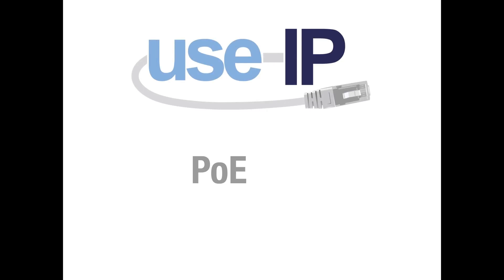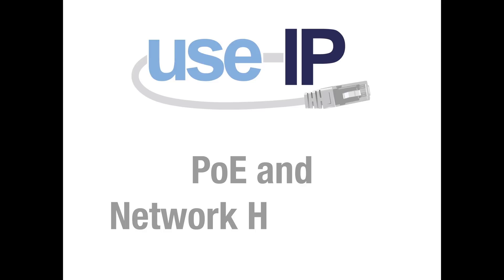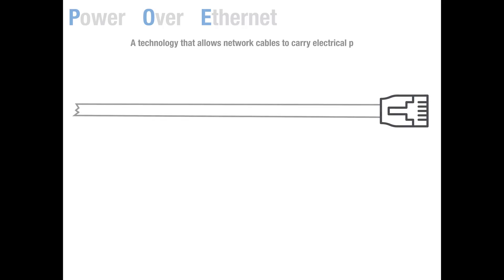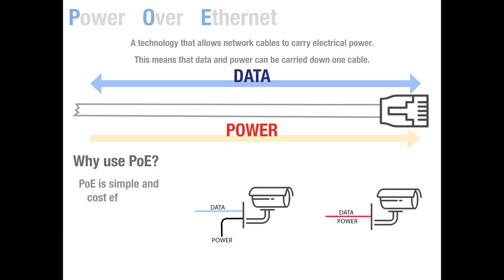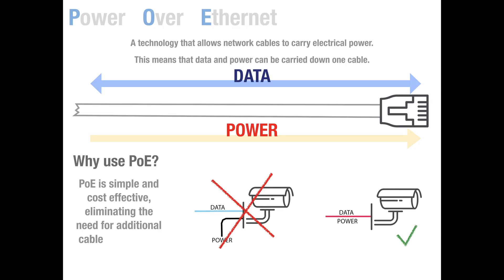Hello and welcome to this one-off video where we will be looking at the basics of PoE and network hardware. PoE stands for Power over Ethernet. This is a technology that allows network cables such as Cat5e or Cat6 to carry electrical power, meaning that both data and power can be carried down one cable. PoE is popular as it is simple to use and cost effective, eliminating the need for additional cables and power supplies.